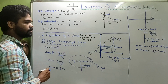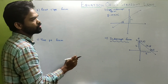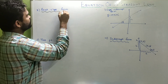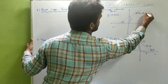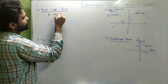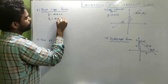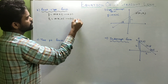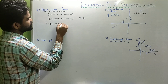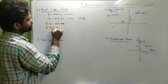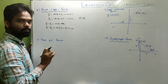Now the point-slope form. If a point P(x₁, y₁) lies on the line y = Mx + c, substituting gives y₁ = Mx₁ + c. Subtracting this from the slope-intercept equation: y − y₁ = M(x − x₁). This is the point-slope form — used when you know a point and the slope.